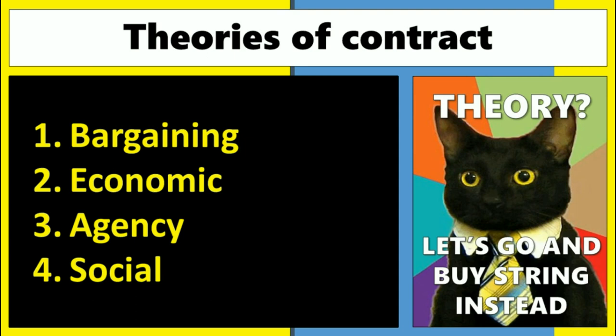When we're looking at the underlying theories behind what a contract is and what contract law is, these theories categorize themselves into four broad areas. The first, probably the most straightforward, is what we call bargain theory. That's the idea that two or more people come together, negotiate and thrash out what each is going to give to the other. Each side exchanges promises through the process of negotiation and they give something known as consideration as the price for that particular bargain.